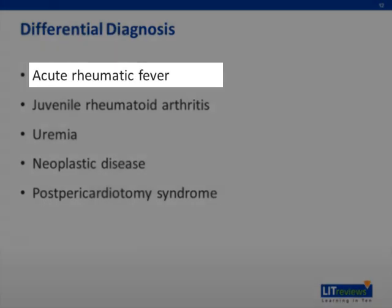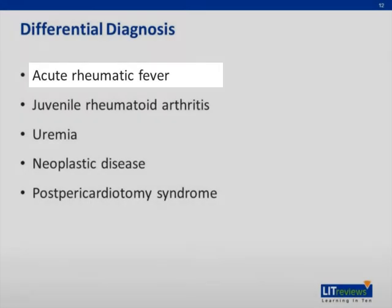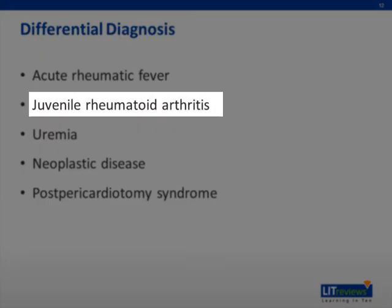Pericarditis occurs in acute rheumatic fever as a component of pancarditis and is associated with acute valvulitis. It generally responds to steroids, and tamponade is very rare. Pericarditis is also a common manifestation of juvenile rheumatoid arthritis and may, in fact, be the only manifestation, sometimes preceding onset of arthritis by months or years. Treatment consists of steroids or salicylates.